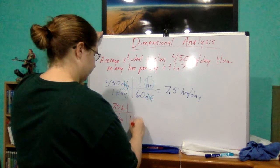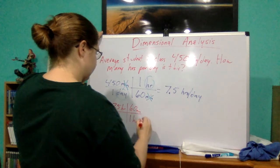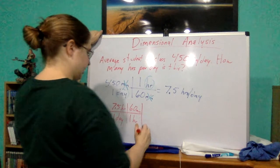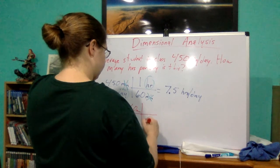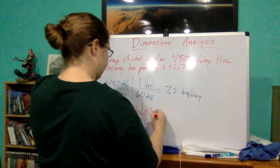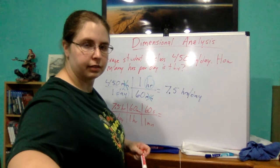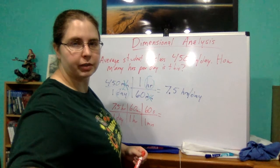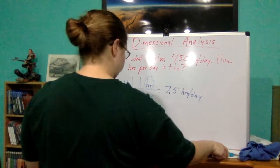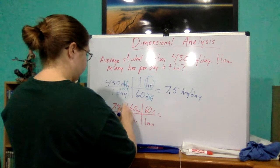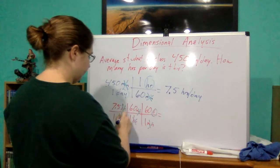In one hour, there's 60 minutes. In one minute, there are 60 seconds. Then cancel out. Cancel out hours, minutes, and we're left with seconds per day.